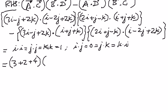For vector b dot vector d: 2i·i = 2, i·j = 0, i·k = 0; j·i = 0, j·j = 1 so plus 1, j·k = 0; k·i = 0, k·j = 0, k·k = 1 but there is a negative 1 coefficient. So b·d = 2 + 1 − 1 = 2. We want to multiply this out and also simplify the remaining parts of the expression.